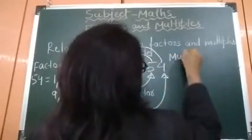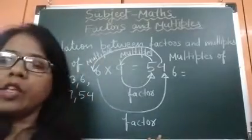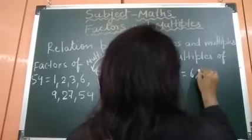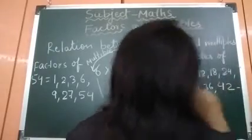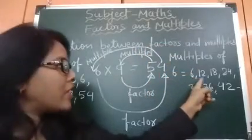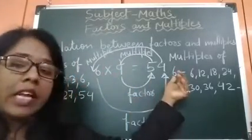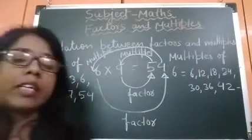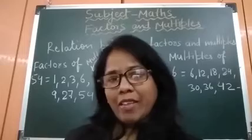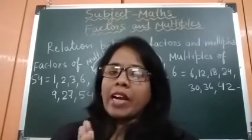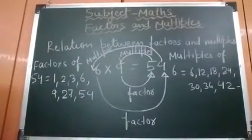Now come to multiples. Multiples of 6 means you read the table of 6: 6, 12, 18, 24, 30, 36, 42. Check — all these numbers are either equal to 6 or more than 6. So multiples of a number are always equal to or greater than the given number. By this way, we now know what are factors, what are multiples, and what is the relation between factors and multiples. I hope you all understood and enjoyed.